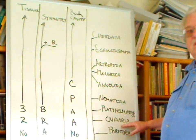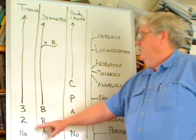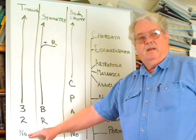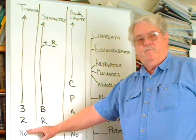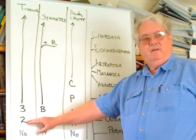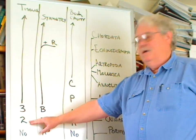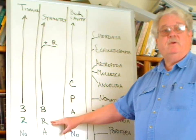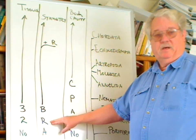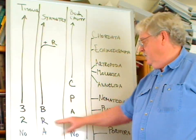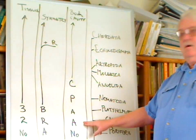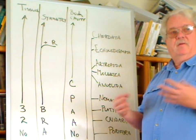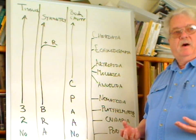Moving on up to the cnidarians: they have two tissue layers, an ectoderm and an endoderm. They have radial symmetry because they are slow-moving at best. And they are acoelomate — they do not have that middle body cavity.